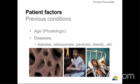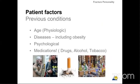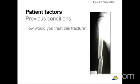The previous conditions — age and associated diseases such as diabetes, osteoporosis, paralysis, obesity, etc. — all influence the type of treatment you can give the patient. Physiological age and diseases including obesity, psychological status, medications, drugs, alcohol, and tobacco: all these elements should be considered when you treat any type of fracture.